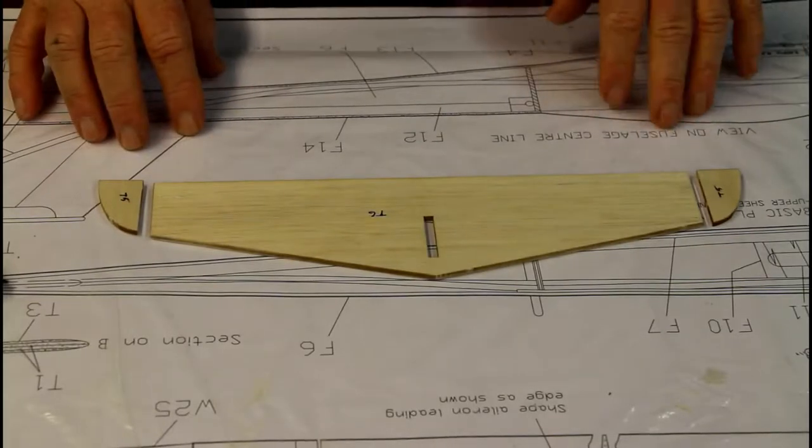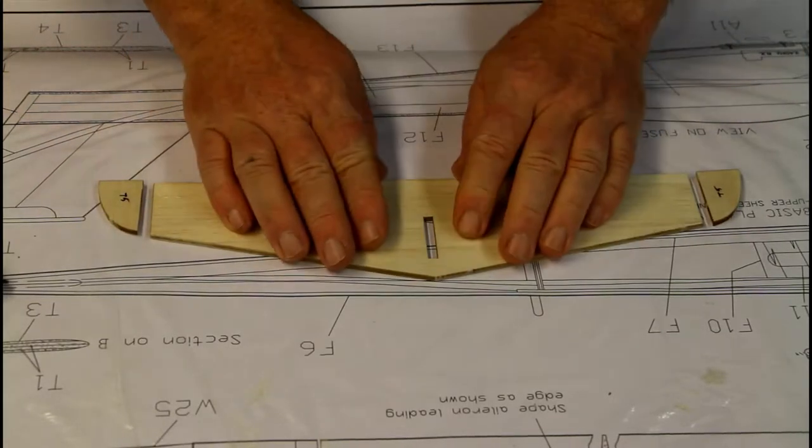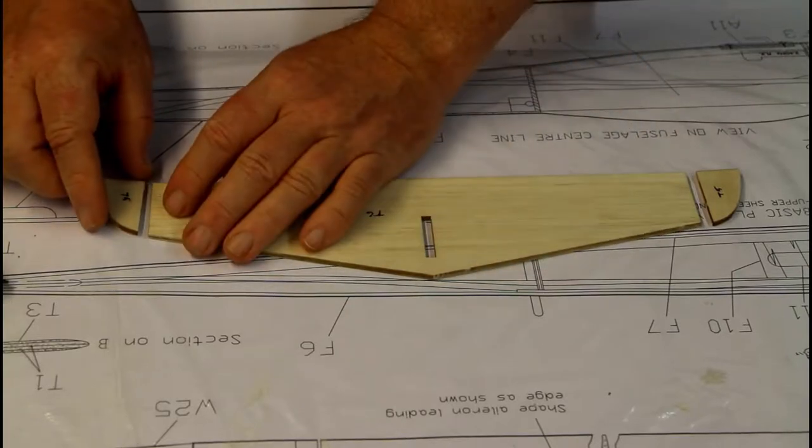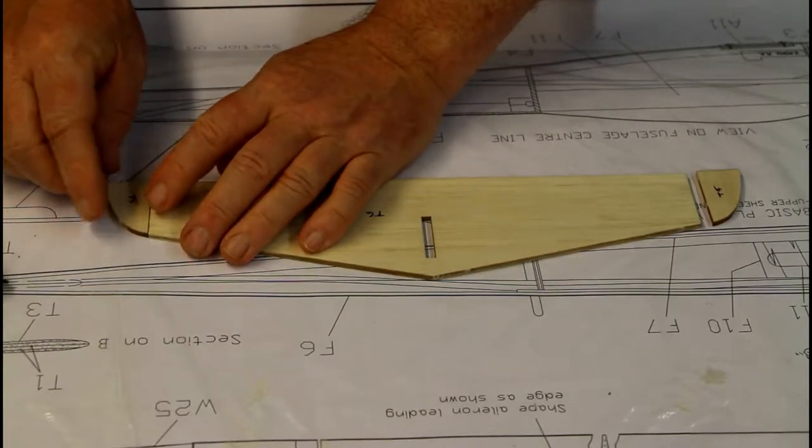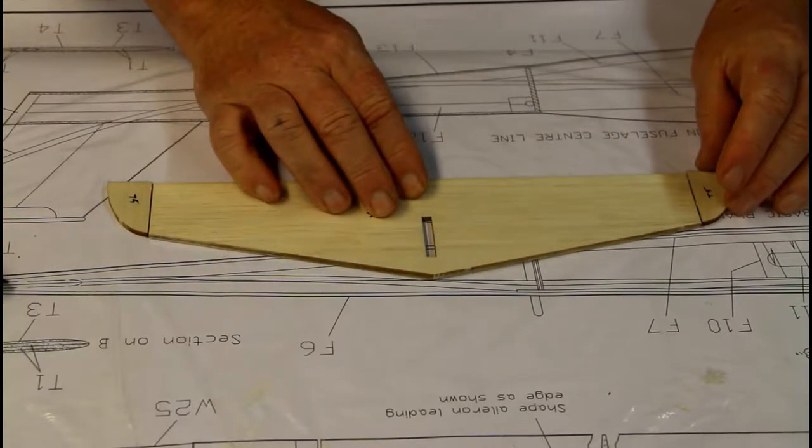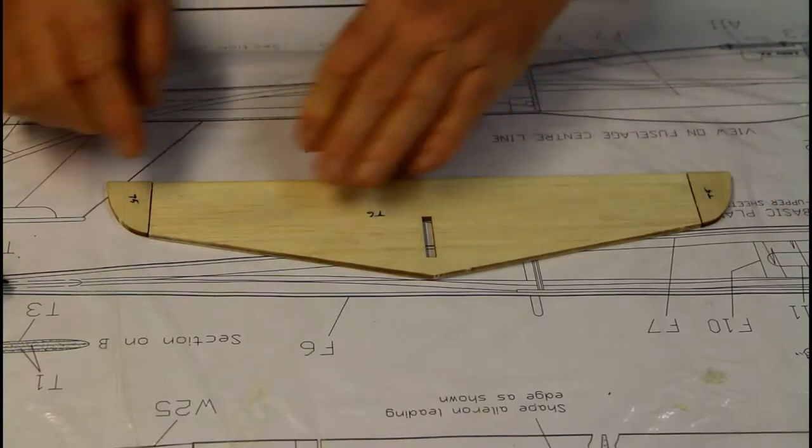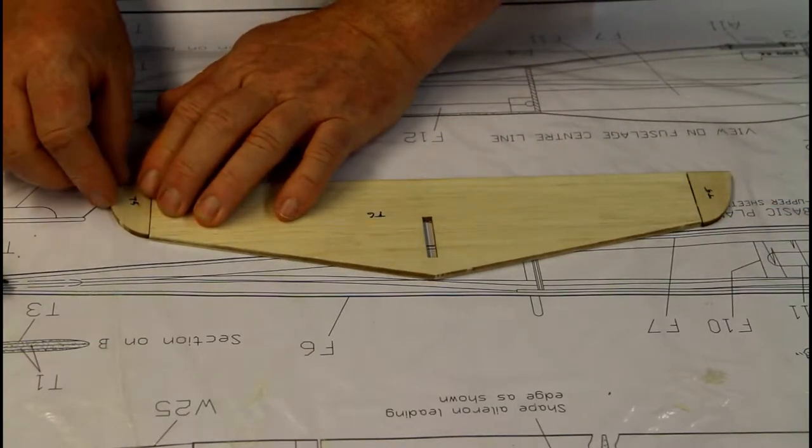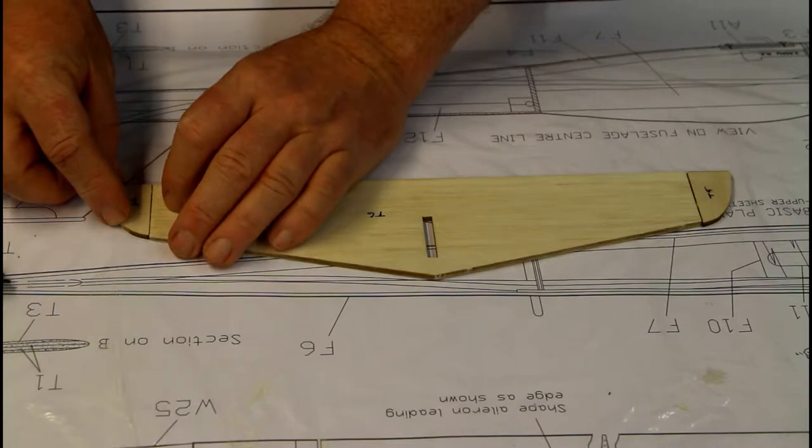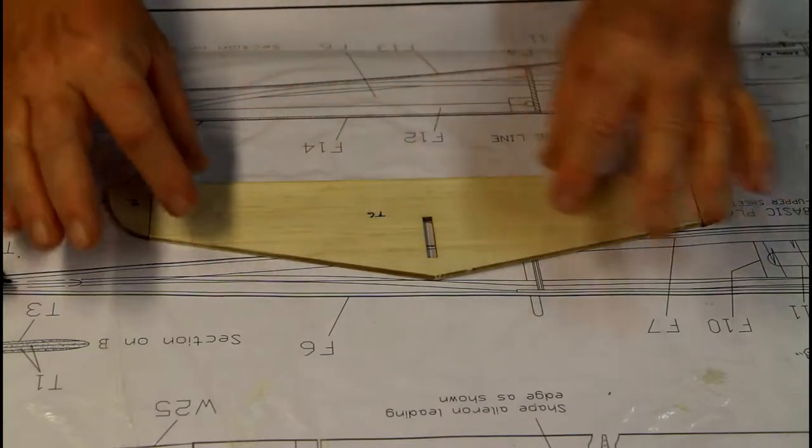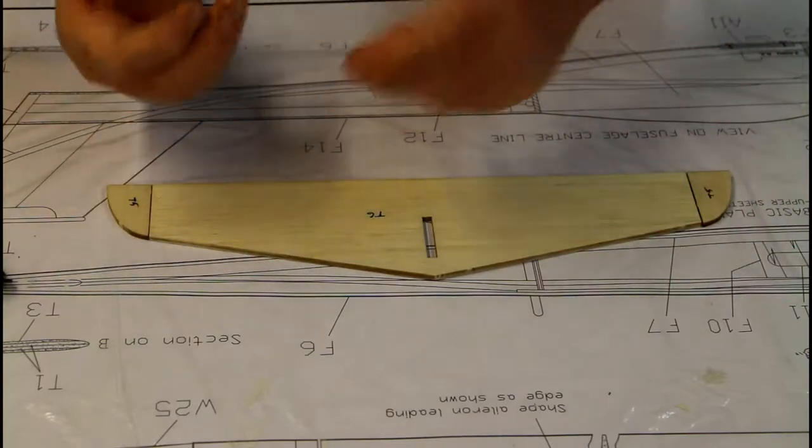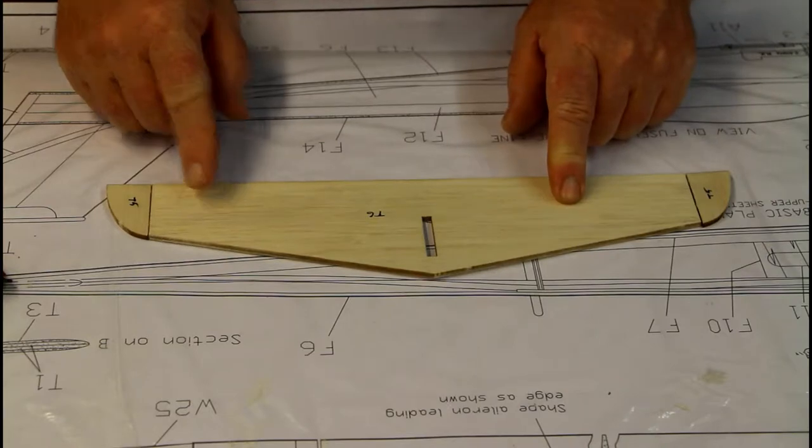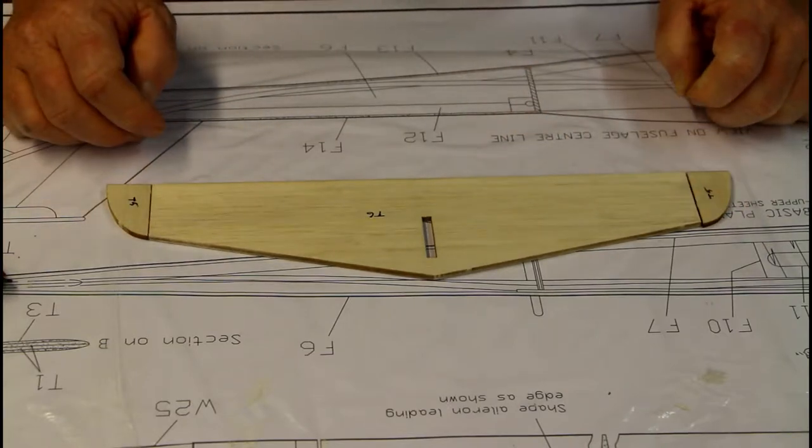The next step is to take the tail plane T6 and glue two ends to it, T5, on either side. These ends are rounded, and they actually prevent the tail plane from warping. It's always good to have cross grained ends like this.